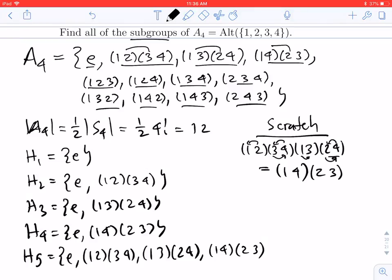And in fact, you can check that if you multiply any two of these, you'll get the third one. So this is closed under products, and so we get another subgroup.